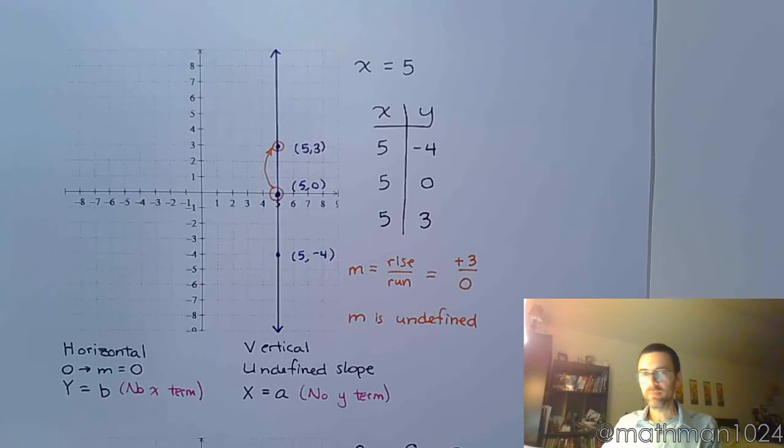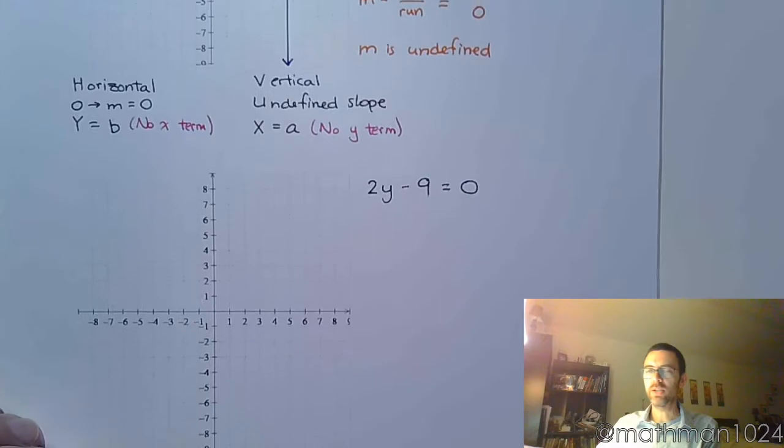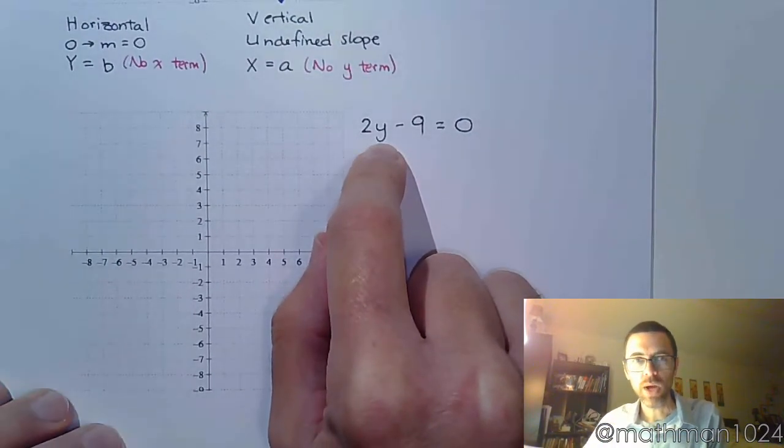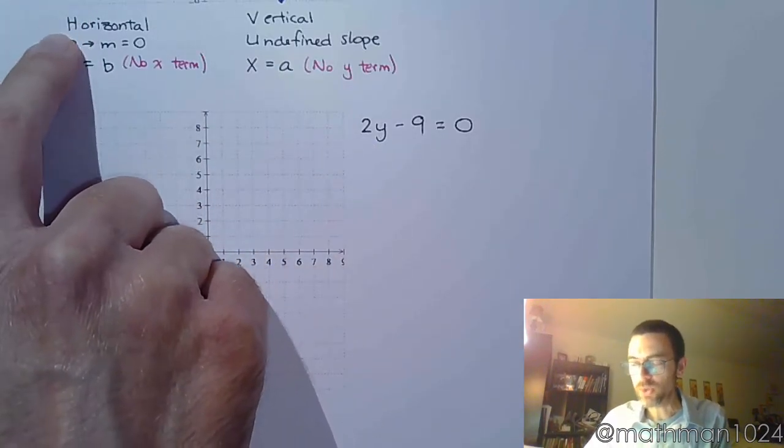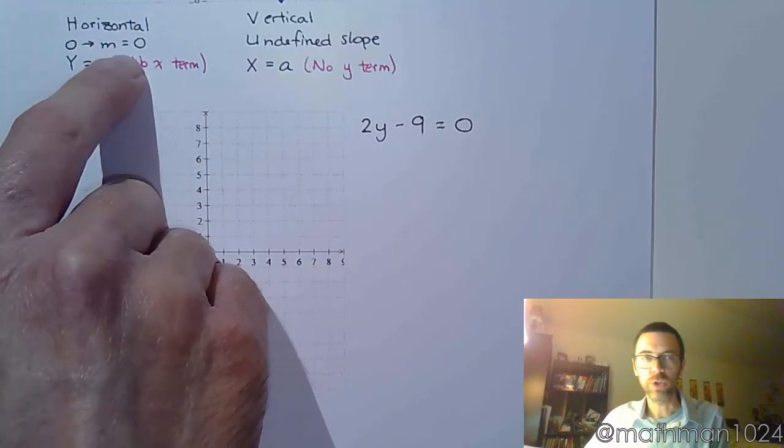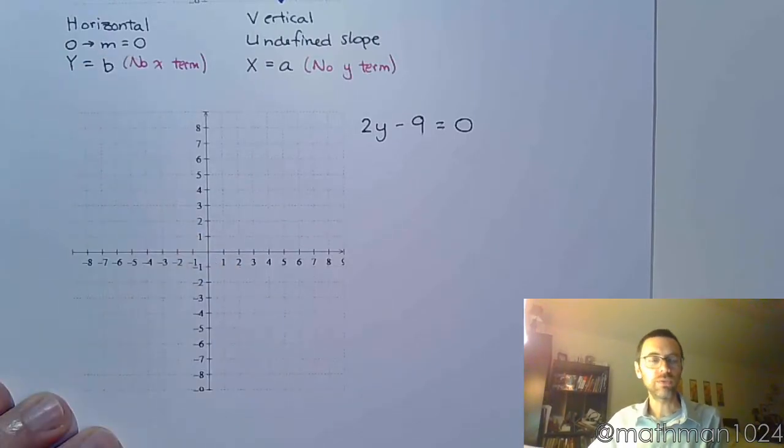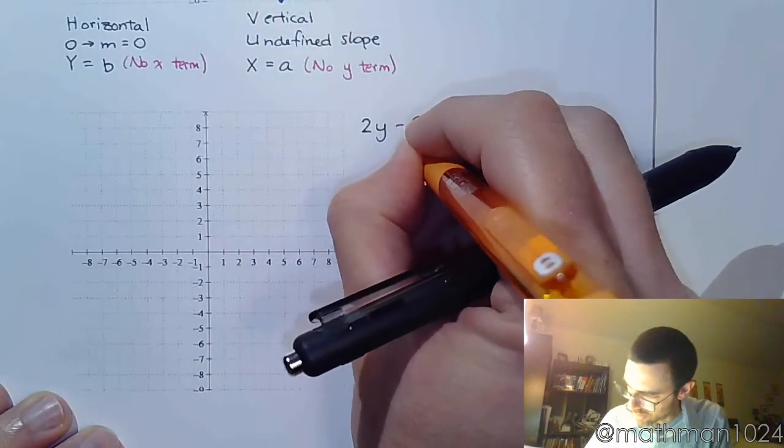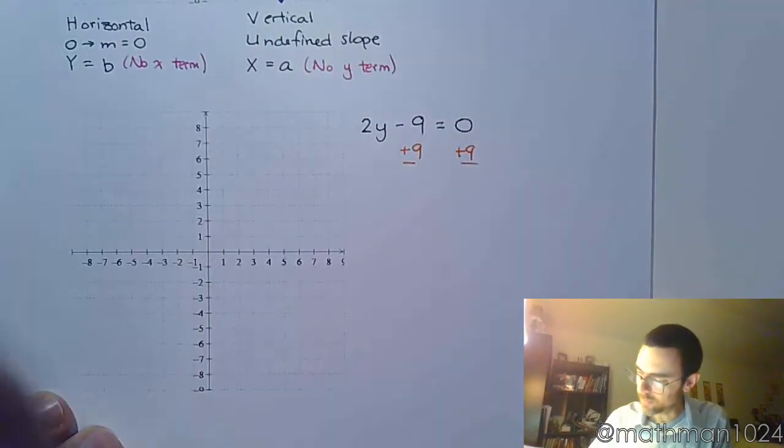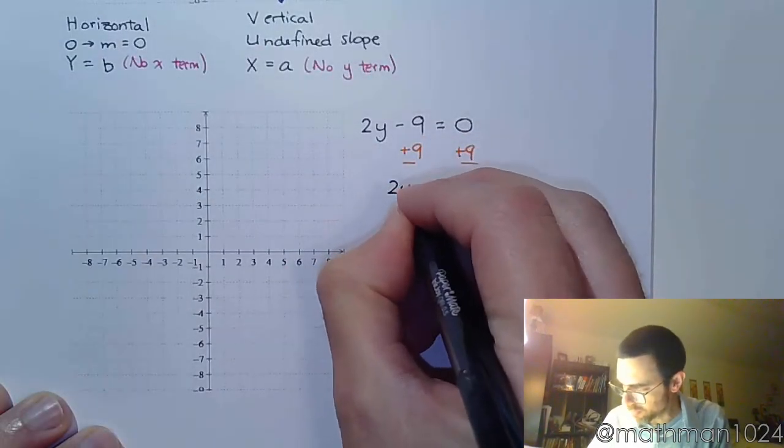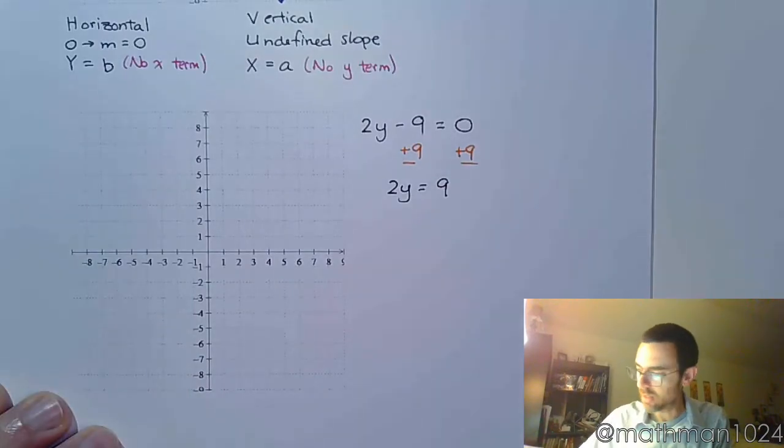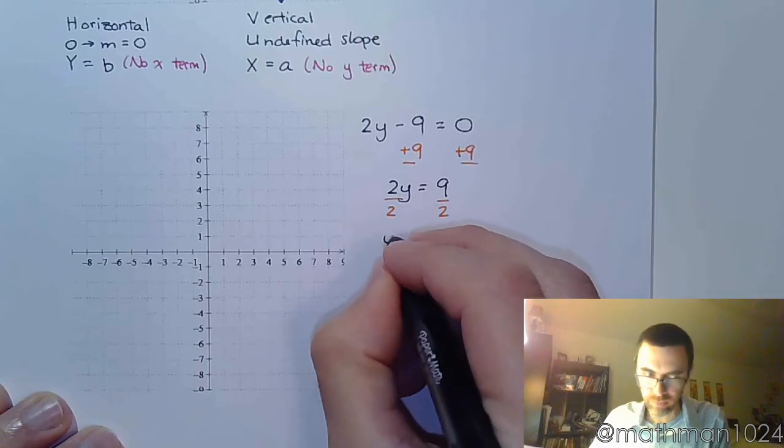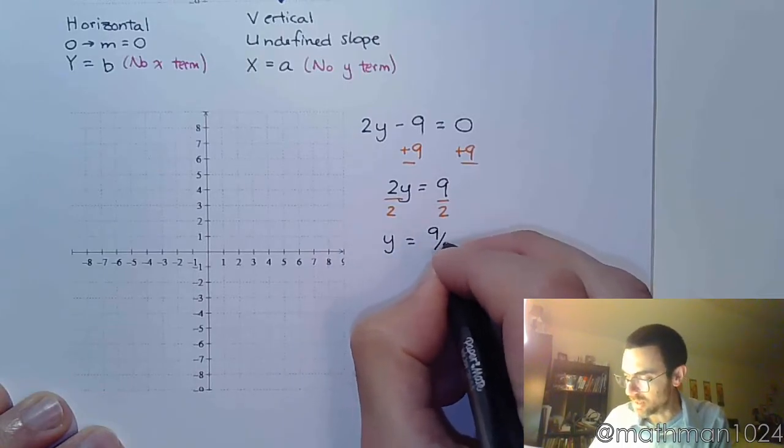All right, one more guide. Let's take a look at 2y minus 9 is equal to 0. Well, you'll notice here that you only have y. So that fits in this form right here. So we know it's a horizontal line. We know the slope is going to be 0. But we need to get it solved for y. So that means we need to move the 9 to the other side. So let's add 9 on both sides. 2y equals 9. And finish solving for y by dividing both sides by 2. So y is equal to 9 halves.